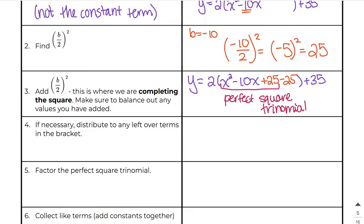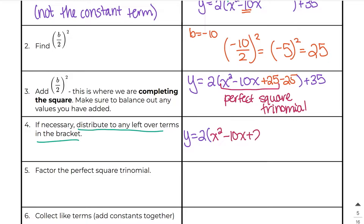In step four, if necessary, distribute to any leftover terms in the bracket. Here this is my leftover term. So I'm going to copy down y equals 2, then copy down my perfect square trinomial and keep it in brackets. But anything that is not the perfect square trinomial — like this negative 25 — I want to pull that out of the bracket. So I'm going to distribute the 2 through to negative 25, and I get negative 50. I bring that outside of the bracket, then copy down the plus 35.